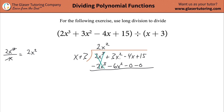So these cancel. Then add these two together — it's going to be negative 6 plus a 3, so that's going to be negative 3x squared. And then you carry down negative 4x plus 15.